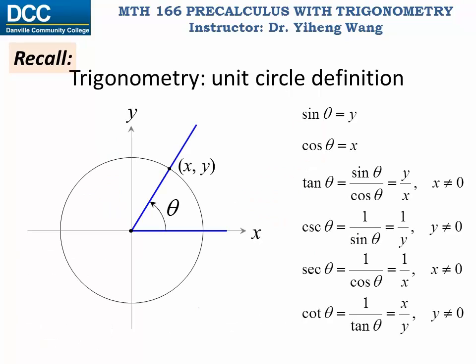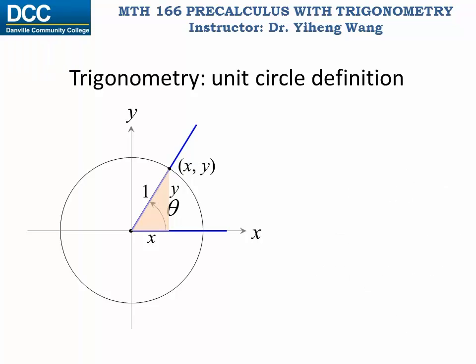So if you recall the unit circle definition for trigonometry that we learned already, on this unit circle we can draw a right triangle of angle theta with three sides: x, y, and 1. Now if I pick an arbitrary point on the terminal side of this angle theta, and this new point has coordinates x prime, y prime, I can again draw another right triangle of angle theta, and this right triangle has sides x prime and y prime, and the hypotenuse is the perpendicular distance from this point to the origin, and this is r prime.